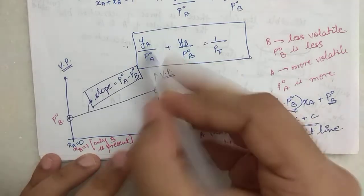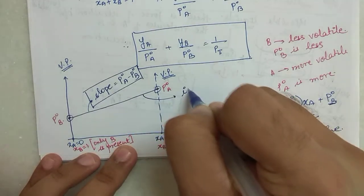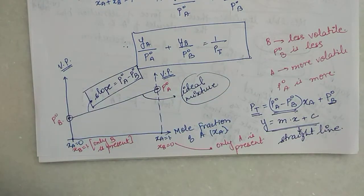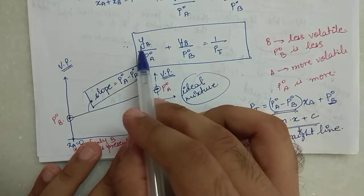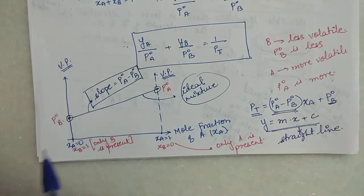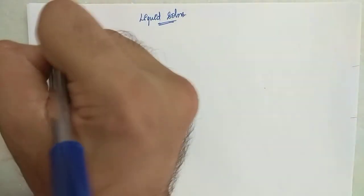This straight line exists because all of this is based on Raoult's Law, and in Raoult's Law we assume an ideal solution or ideal mixture. So this graph is based on your ideal mixture. Now we will try to plot the same graph using mole fractions in vapor phase. We had considered mole fraction in liquid phase; now let's see how the graph is plotted on the basis of mole fraction in vapor phase.